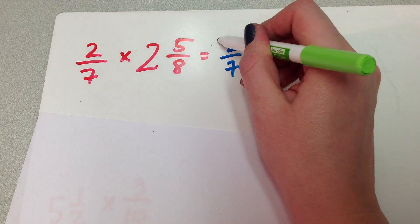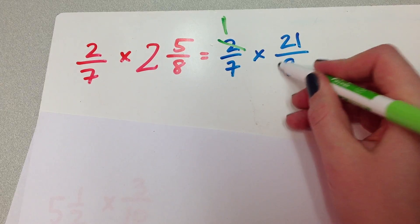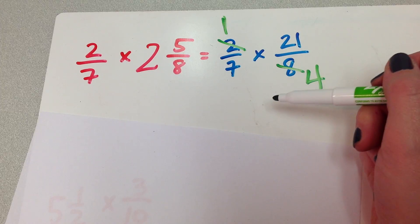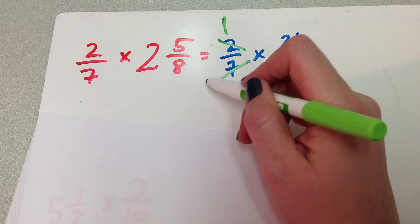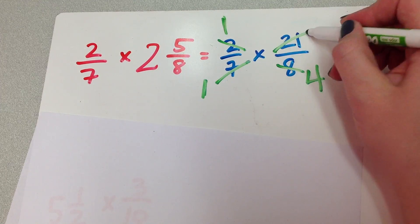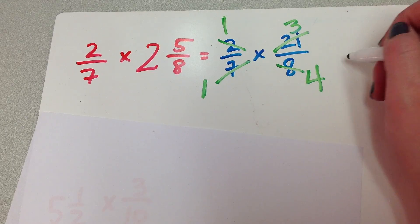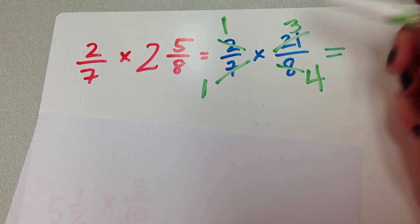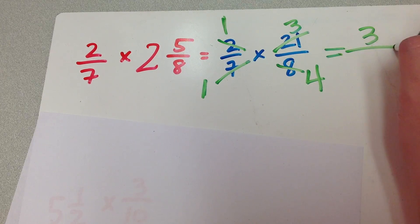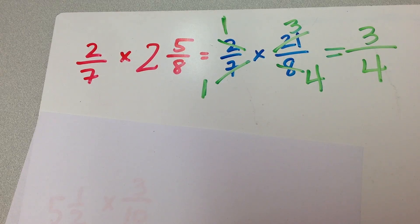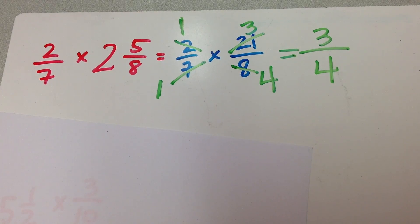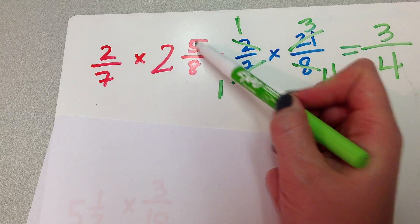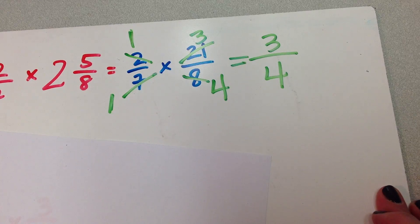2 divided by 2 is 1. 8 divided by 2 is 4. 7 and 21 I'm going to divide by 7. 7 divided by 7 is 1. 21 divided by 7 is 3. And then I'm just going to multiply my new outside numbers. 1 times 3 is 3, 1 times 4 is 4. So you can see that 2 sevenths times 2 and 5 eighths equals 3 fourths.